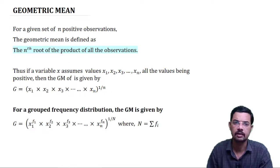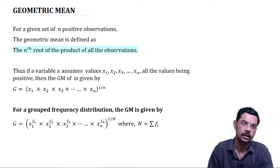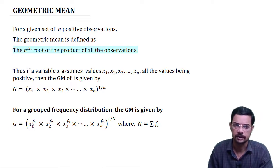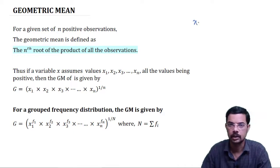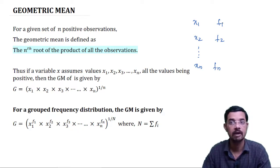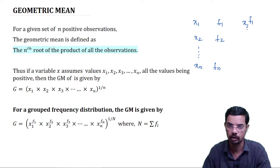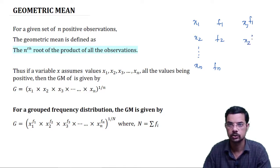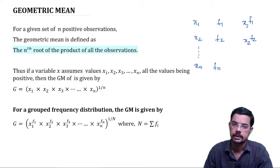In case of a continuous or grouped frequency distribution, it is the same method. Here x1 is repeating f1 number of times, x2 is repeating f2 number of times, and xn is repeating fn number of times. So x1 has to be multiplied f1 times, which gives x1 raised to f1; same way x2 raised to f2, and xn raised to fn.